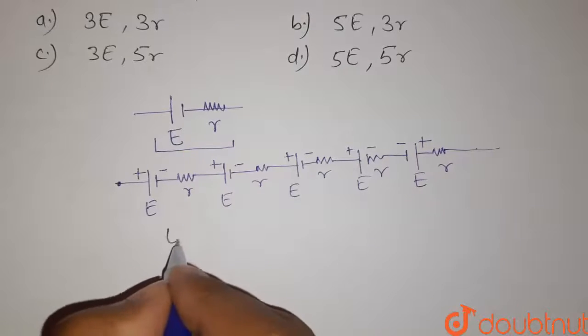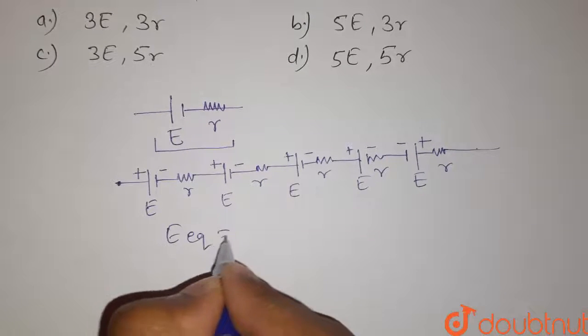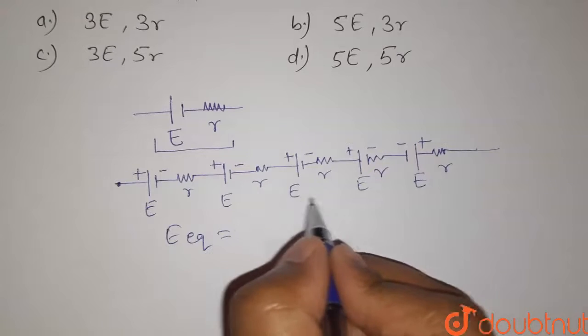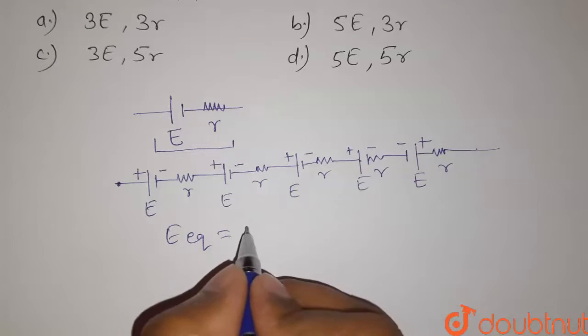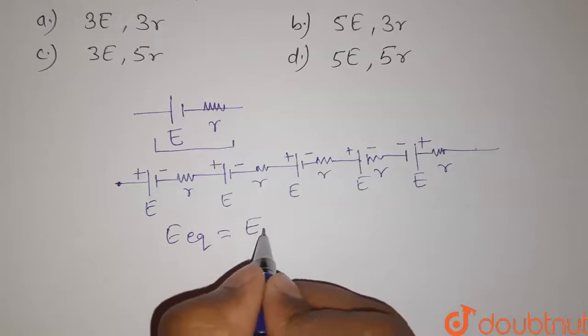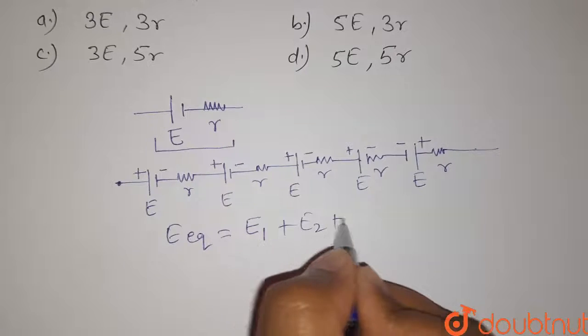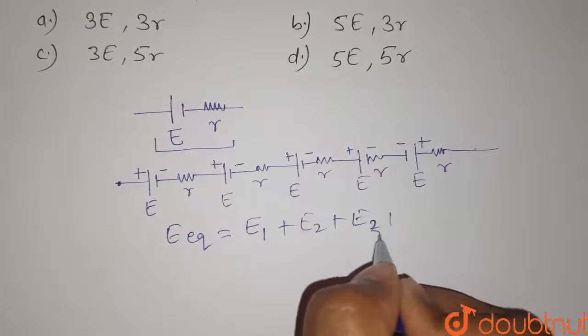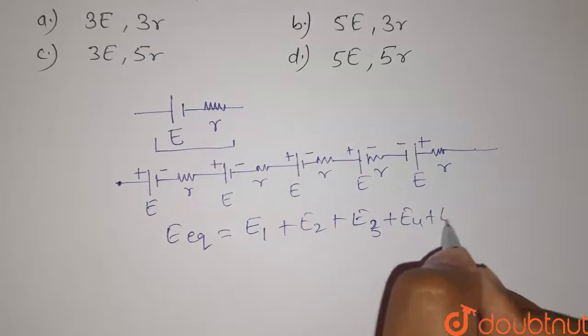Now the equivalent EMF is given by the sum of EMF of individual. So here E equivalent will be equal to E1 plus E2 plus E3 plus E4 plus E5.